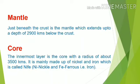Next is about the core. The innermost layer is the core, with a radius of about 3500 km. It is mainly made up of nickel and iron, which is called NiFe. NI means nickel and FE means ferrous, that is iron.